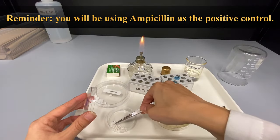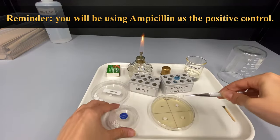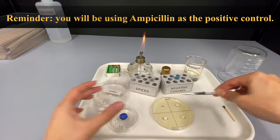For the positive control, pick up the streptomycin disc and place it in the center of the streptomycin section.